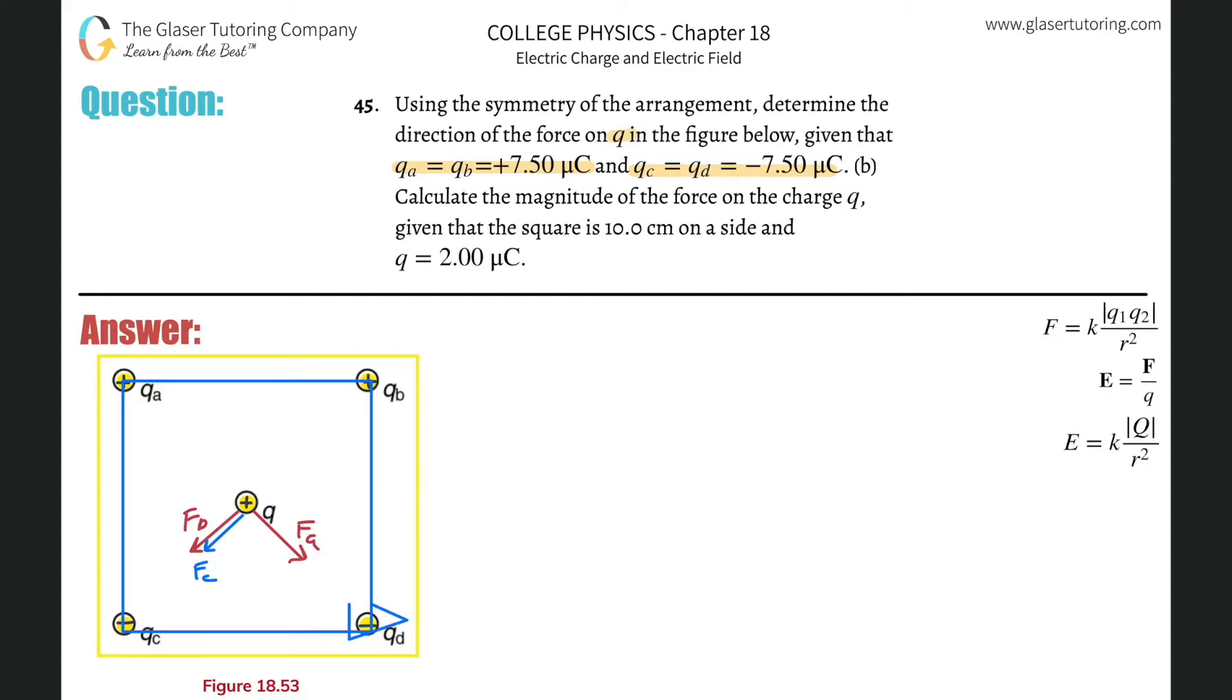We also have the same thing here. Here's a negative, here's a positive. So it's the same thing, pointing in that direction. So basically all we got to really do here, now they're talking about the symmetry. Pretend that you had these four forces pulling on this particular charge. Where's the charge going to move? It's going to move down, directly down.